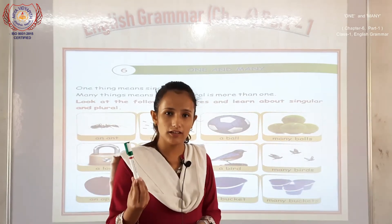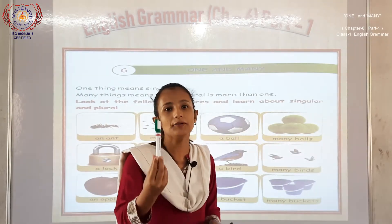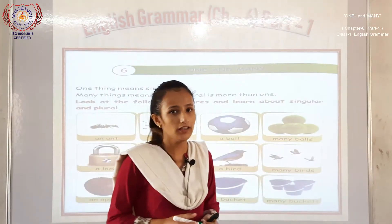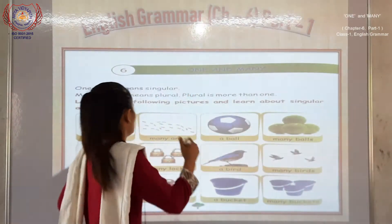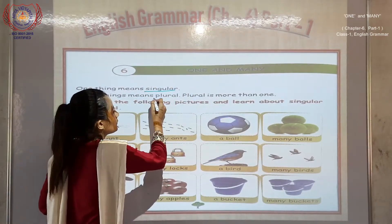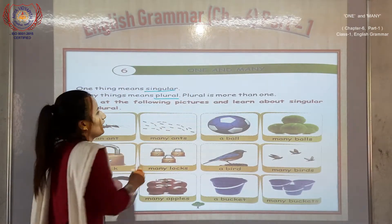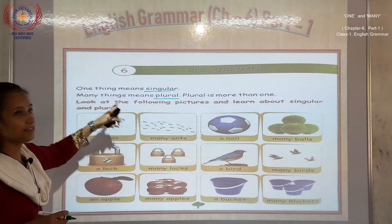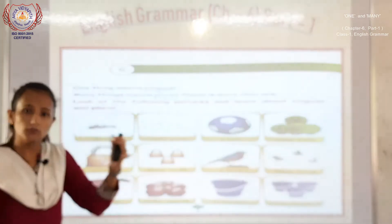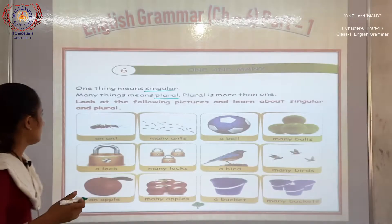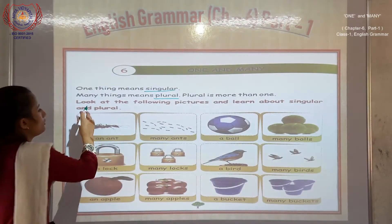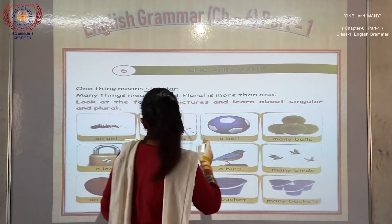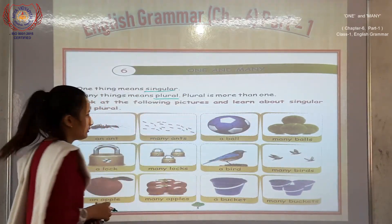Sri Fati paas ek pen hai — we have only one pen, so that is singular. One is singular, and many things — bohut sara — is plural. Now, look at the following pictures and learn about singular and plural.